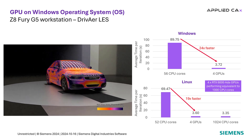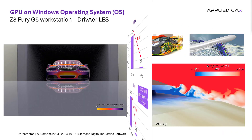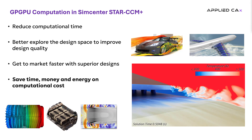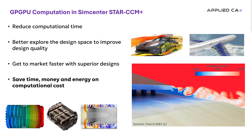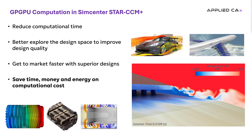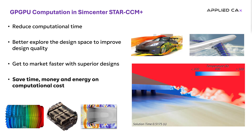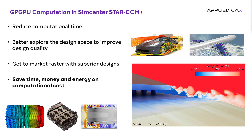Each GPU card in this instance is equivalent to 256 CPU cores. As we've seen, depending on the physics applied, you can achieve significant reductions in computational time with GPUs in Simcenter Star CCM+. This time savings directly translates to quicker turnarounds on simulations, with the ability to more thoroughly explore the design space and get to market quicker with superior designs. We've also seen a significant energy benefit which is beneficial to the environment and reducing your utility cost. The development for GPU computing is currently dynamic in Star CCM+, with additional capabilities added in each release. Please refer to the release notes and documentation to see what's available in the current version of Star CCM+ that you're running.